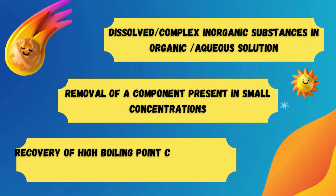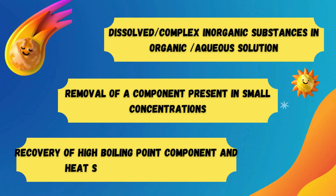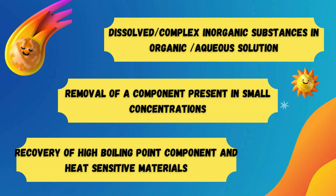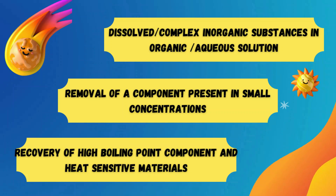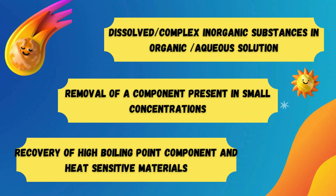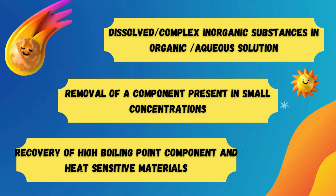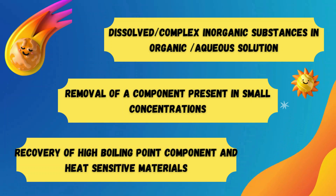Furthermore, liquid-liquid extraction involves dissolving complex inorganic substances in either organic or aqueous solution solvents. It can remove a component present in small concentration in a mixture. For example, liquid-liquid extraction can extract hormones which are present in animal oil. The recovery of a high boiling point component present in small quantities can be achieved in the waste stream — for example, acetic acid can be recovered from cellulose acetate compounds using the liquid-liquid extraction process. In addition, liquid-liquid extraction is preferable to recover heat-sensitive materials such as food, where low to moderate processing temperatures are needed.